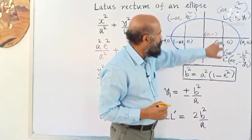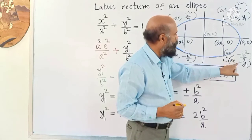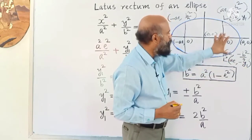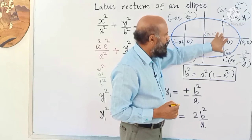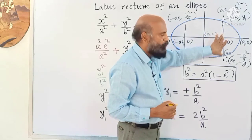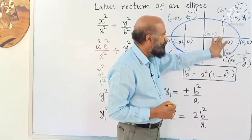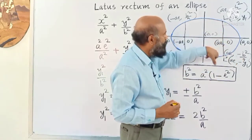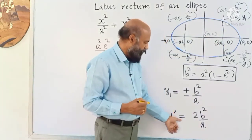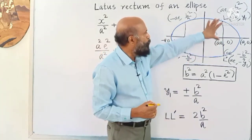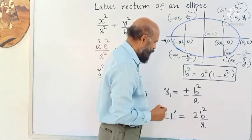Now, the length of the latus rectum: the y-coordinate of one end is b²/a and the other end is −b²/a. So the total length LL' = b²/a + b²/a = 2b²/a. Therefore, the length of the latus rectum is 2b²/a.